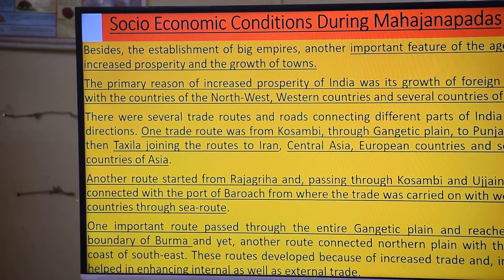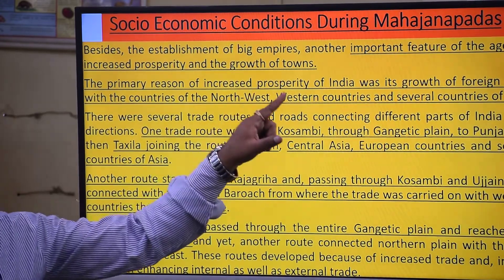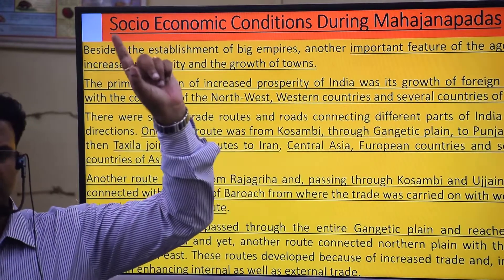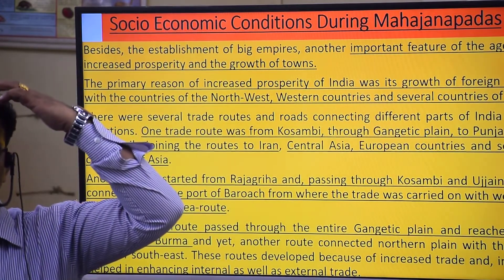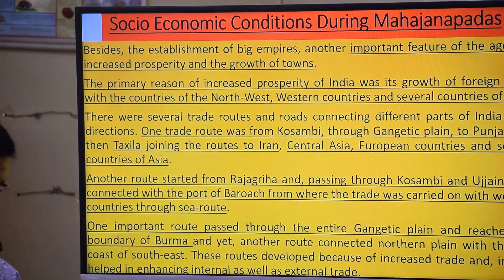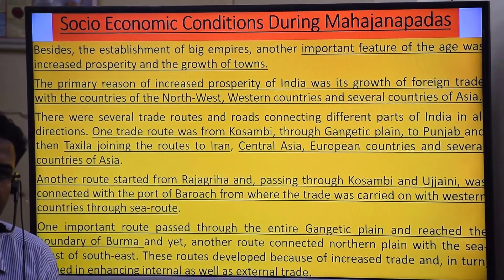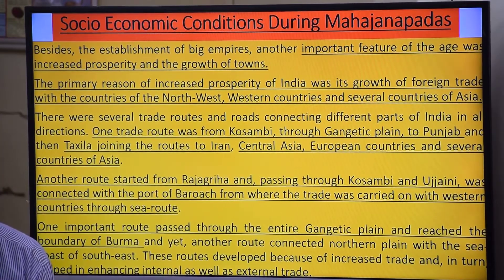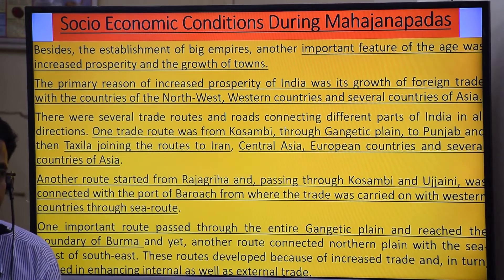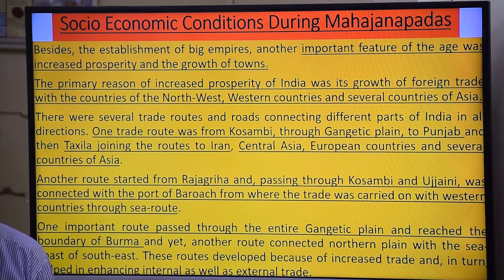The primary reason for increased prosperity of India was the growth of foreign trade with countries of the Northwest, West, and several countries of Asia — including Burma to the east. After the Greeks, India started moving toward the Northwest as well, and also toward the Arabian Sea and Southeast. With more trade came more demand to produce goods, leading to more industrialization and more urbanization.